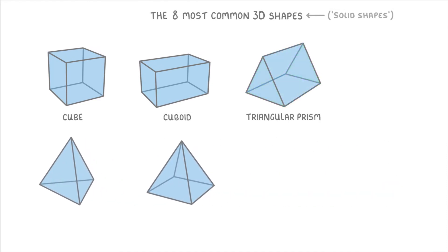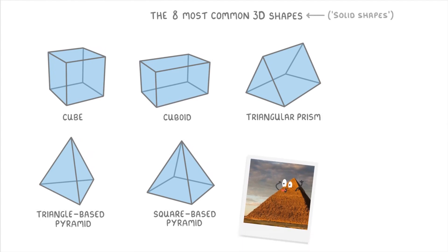And then the 2 types of pyramid, which are the triangle-based pyramid and the square-based pyramid. They're called this because they both look like pyramids, and have either a triangle or a square at the bottom.